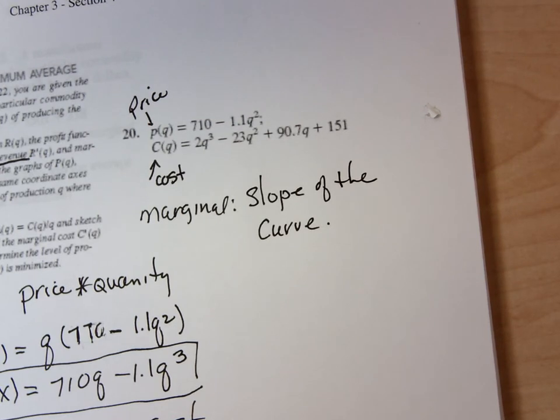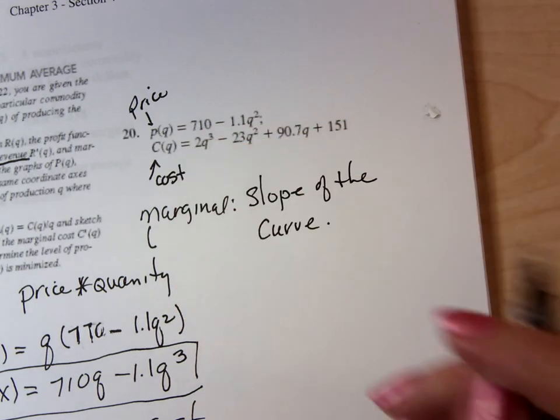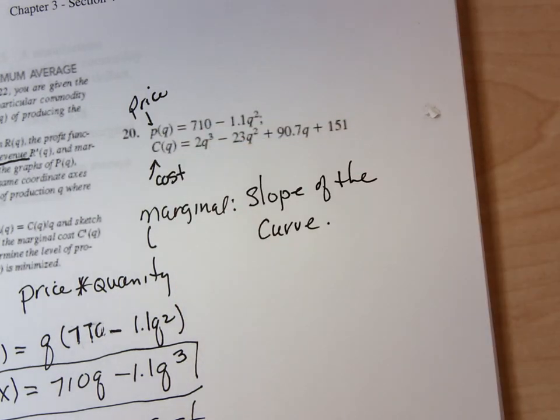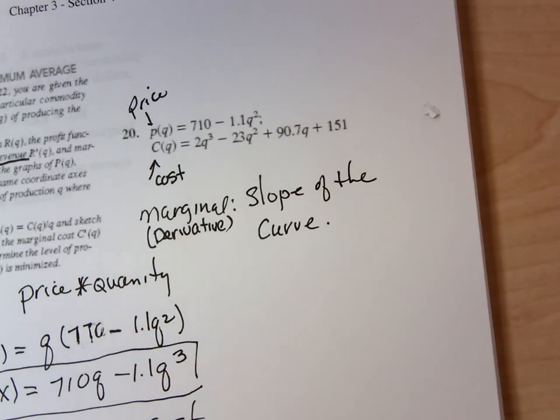Marginal. Slope. Slope. F prime. So when you're talking about the marginal cost, it is the slope of the cost curve, or it's the derivative of the cost curve. If they say marginal revenue, it is the derivative of the revenue curve or the revenue function. So the word marginal is going to be derivative.